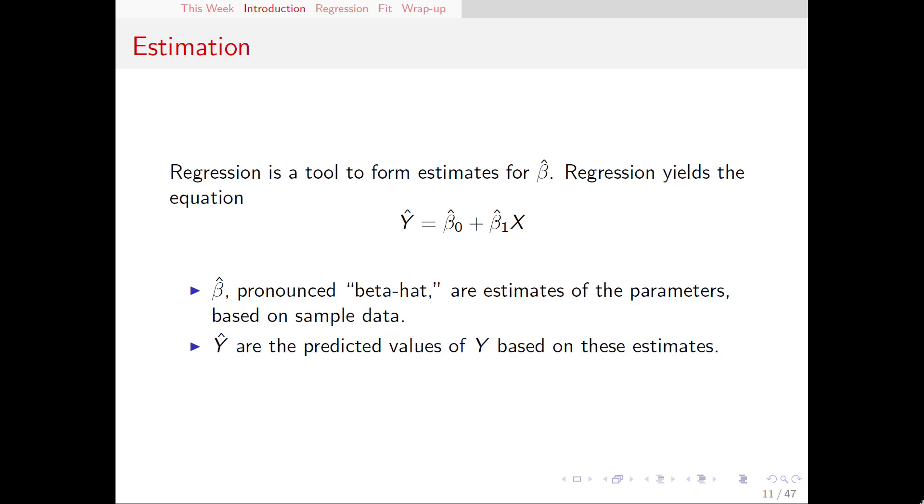When we run a regression using our sample, that's going to give us what we call the beta hats—those are our estimates: β₀ hat and β₁ hat. And whenever we have a hat, that means it's an estimate based on our sample.